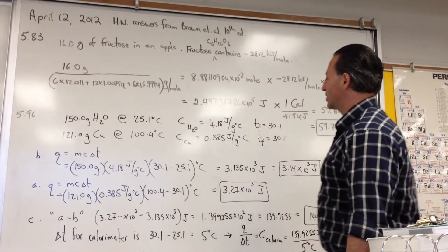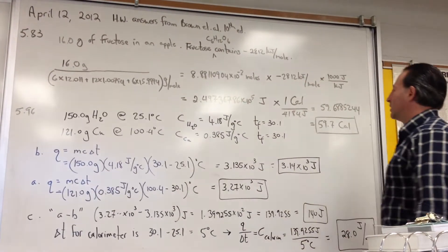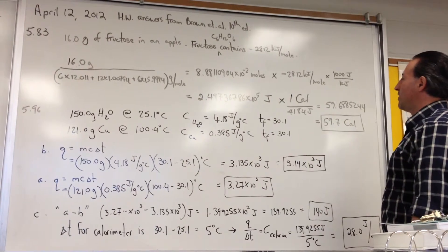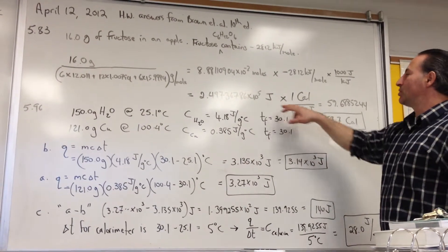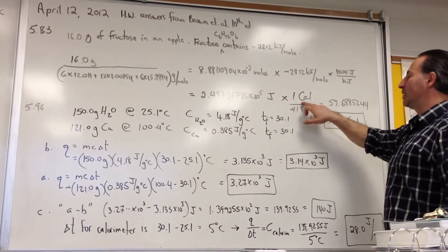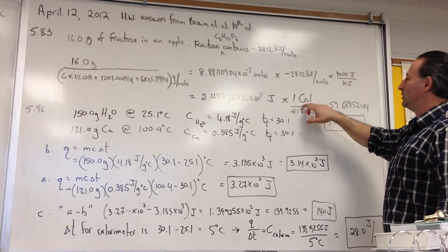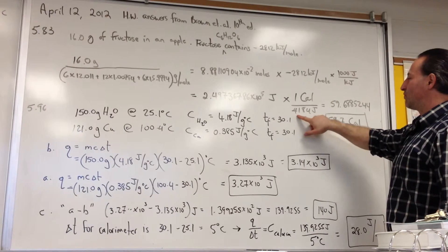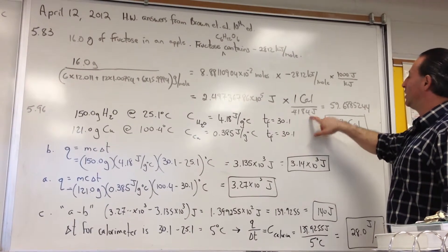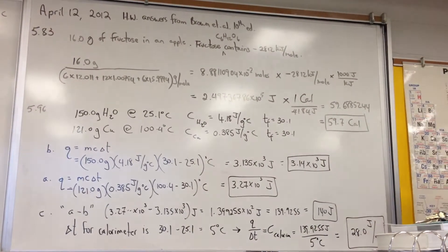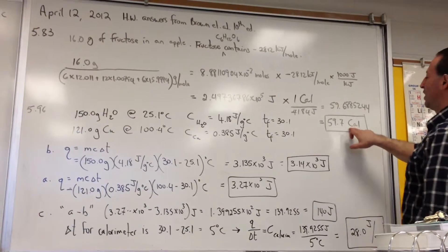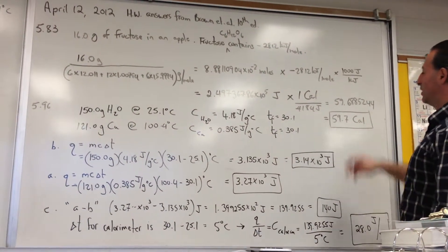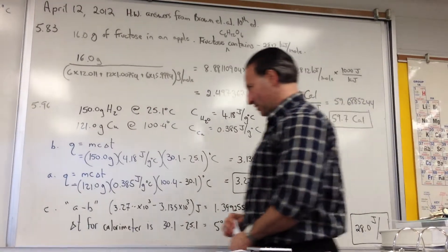That gives us how many joules there are in 16 grams of fructose, which has the formula C₆H₁₂O₆ — like most saccharides. We then convert from joules into food calories. Food calories use a big-C Calorie, and there are 4,184 joules in a dietary calorie. That converts to 59.7 Calories, so 16 grams of fructose contains 59.7 Calories of food energy.